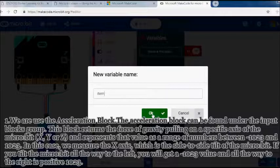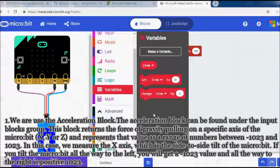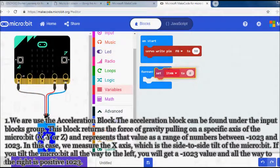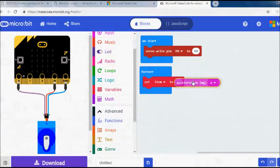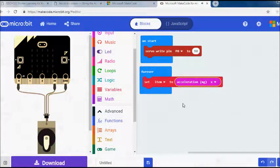In this case, we measure the x-axis, which is the side-to-side tilt of the micro:bit. If you tilt the micro:bit all the way to the left, you will get a minus 1023 value, and all the way to the right is positive 1023.